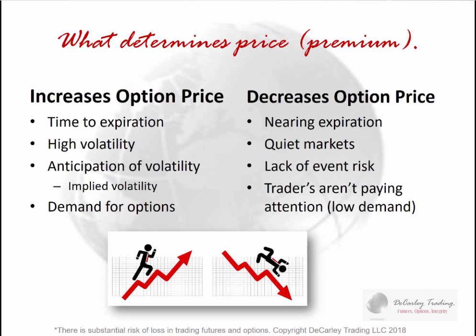There's demand for options. In today's S&P example, a lot of traders are probably buying put options thinking 'what goes up must come down.' The things that increase option price are time to expiration — the more time an option has, the more expensive it is — and increases in volatility or anticipation of volatility. As an option seller, you want to see time go by, markets go quiet, and a lack of event risk, all of which work against option price and in favor of the seller.